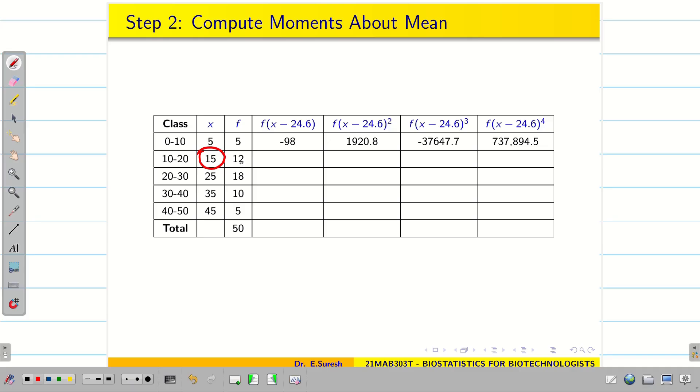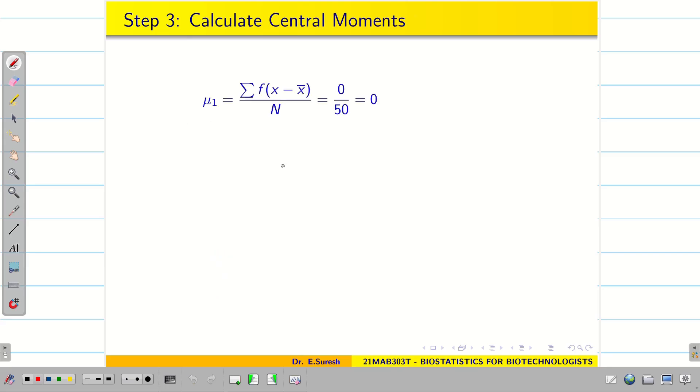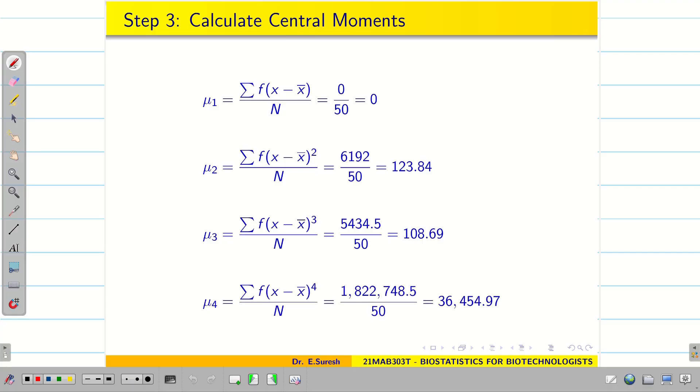Now press calc again. X value is 15. New f value is 12. And press equal to. You get the answer. So we have to fill the table like this. Once this is done, press ac button in calc. Now add all the columns. And then we get the answer. Now write the formula mu1 mu2 mu3 mu4. And substitute the value. Use your calculator. Find the decimals. You can verify this.